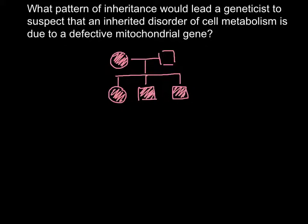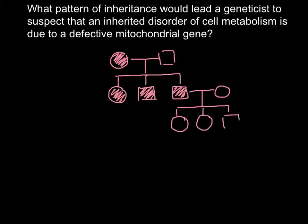So far we cannot tell anything yet, because it looks like this disease is just dominant. But the next generation gives us a clue. For example, when this affected male marries an affected female, all the children — 100% — would be unaffected. This allows us to exclude dominant inheritance.